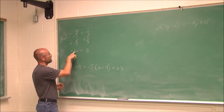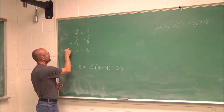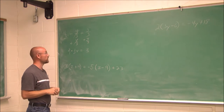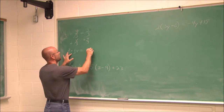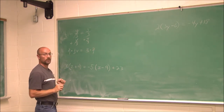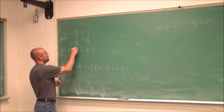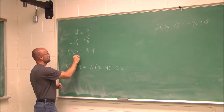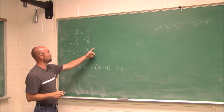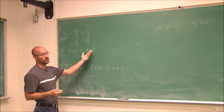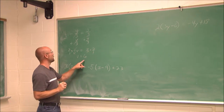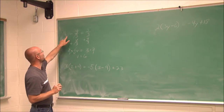I want to undo this ½, so I multiply by its reciprocal. What I do to one side, I do to the other, and this reduces. v equals 3 times 2 over 1, which is just 3 times 2, which is 6. Then I can check my work.